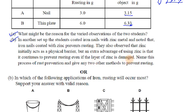Even if the zinc layer is removed, it still prevents rusting because zinc reacts with oxygen to form zinc oxide, which forms a protective layer over the iron surface.